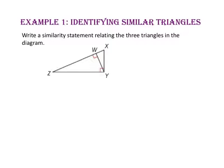In example 1, we will identify similar triangles. Write a similarity statement relating the three triangles in the diagram. Since we know the similarity statements have to be written in corresponding order, let's start by drawing the three triangles oriented in the same way.